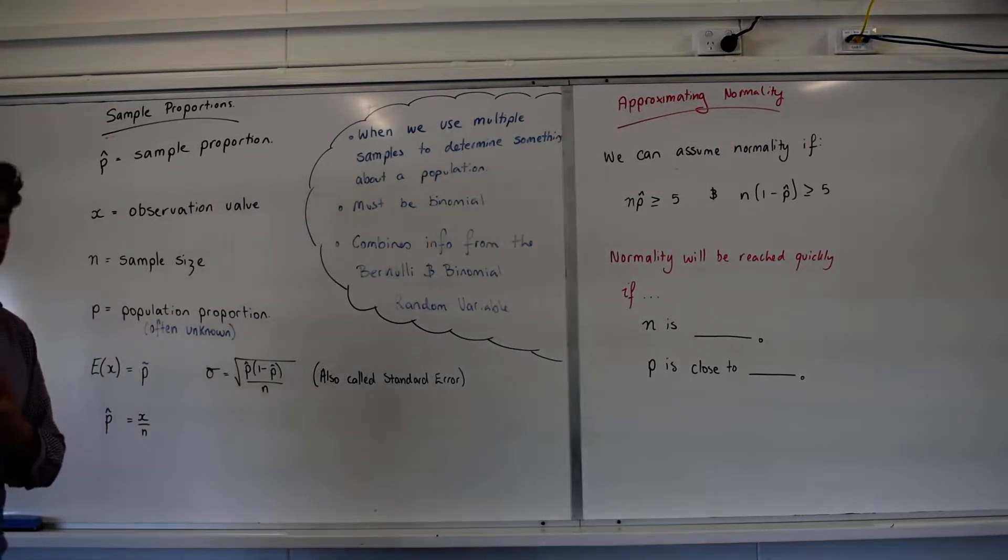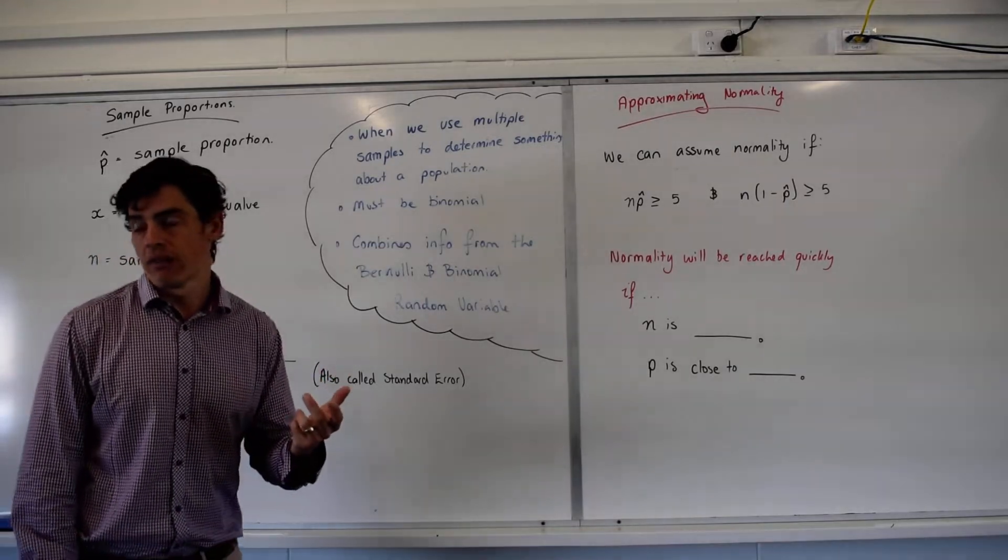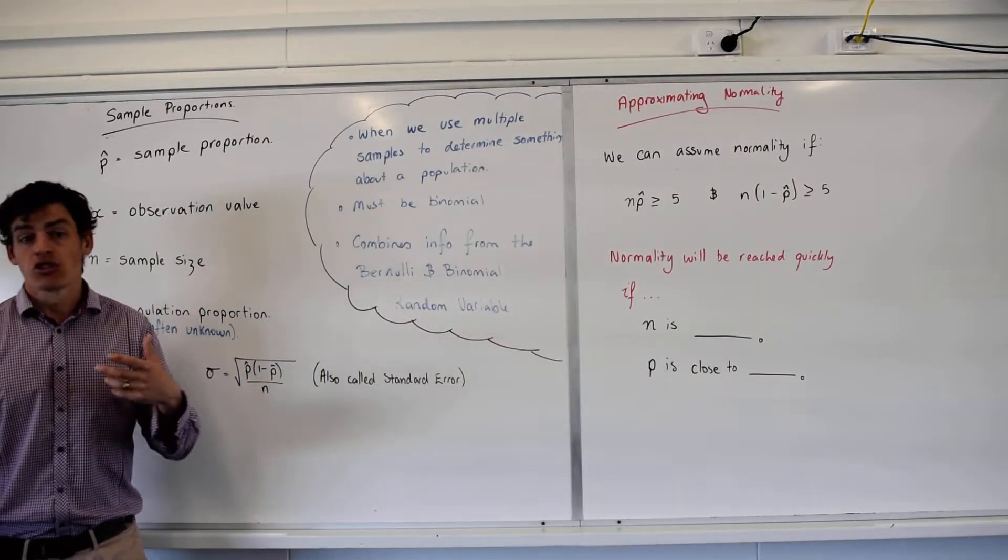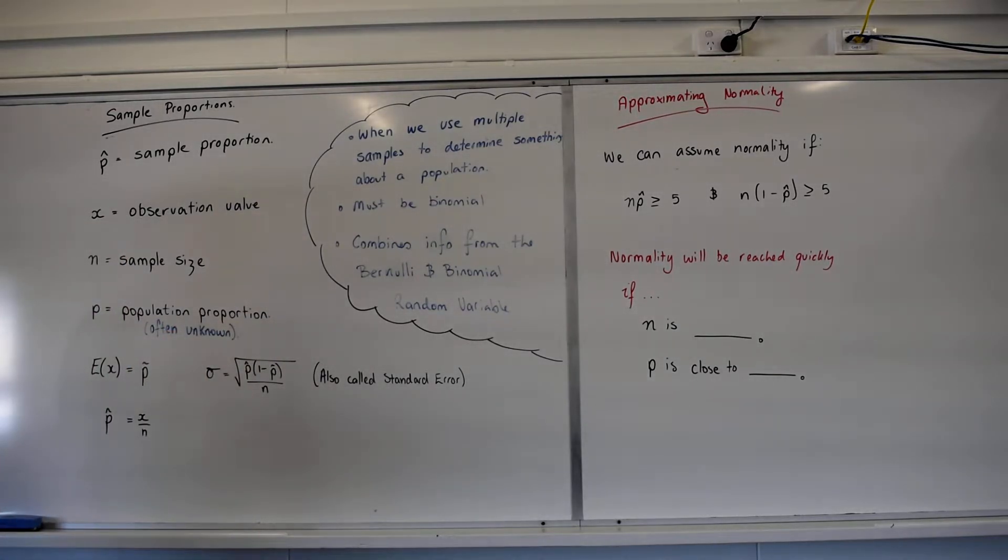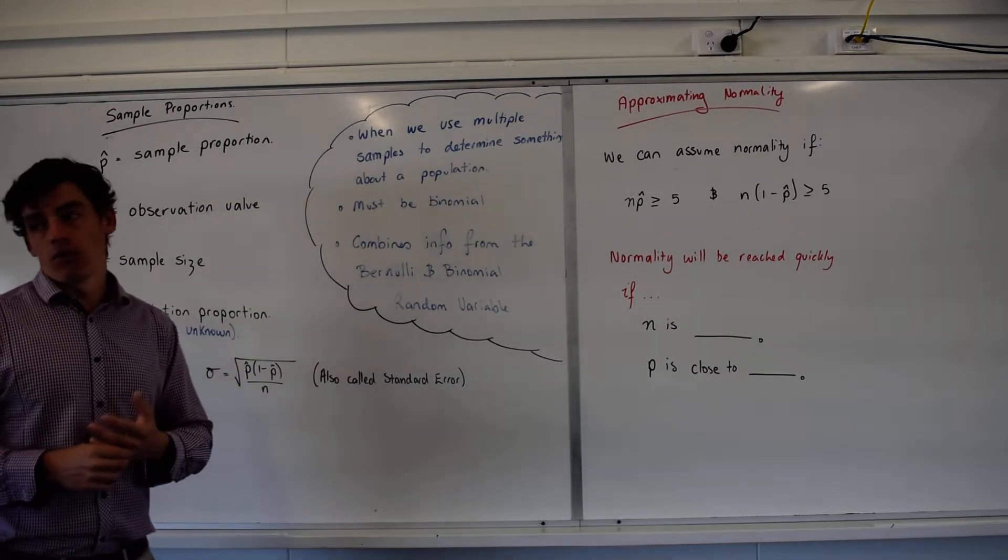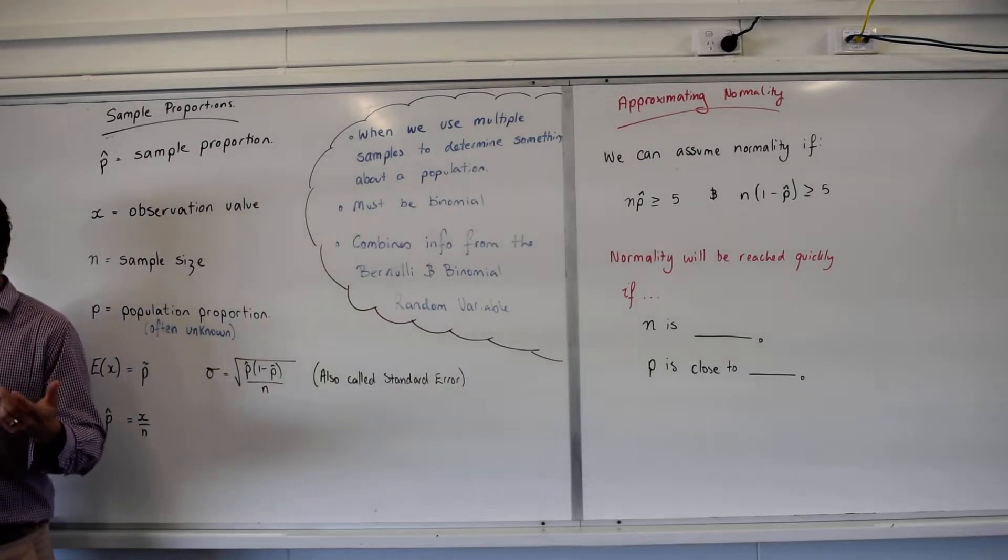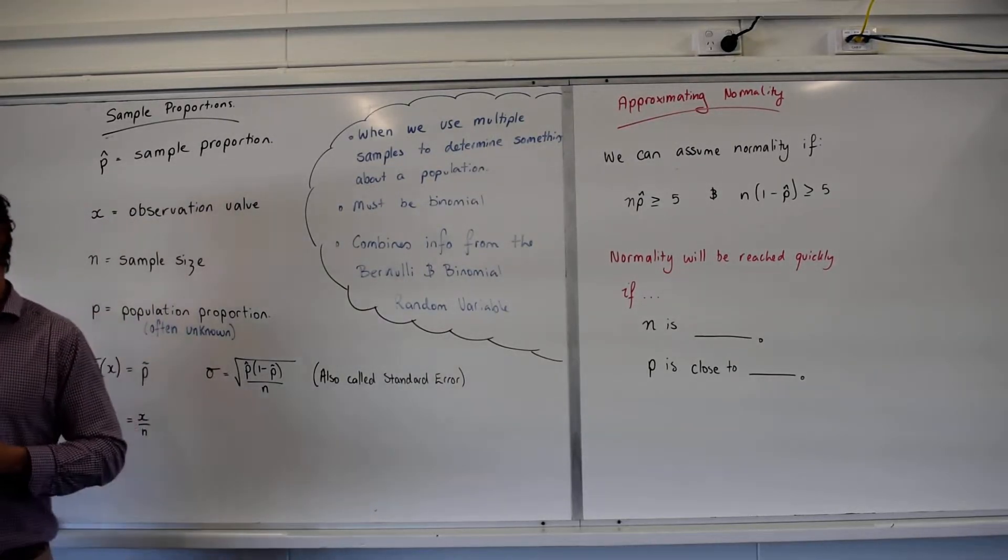Rather than collecting information from the whole population, why do we want to do that? Too hard, takes a lot of time. Rather than doing that, we can use a sample proportion, which is just saying we're going to take samples and identify what's going on, much like our central limit theorem before.